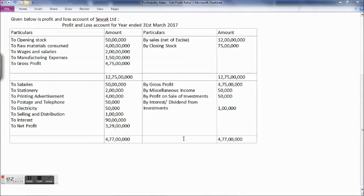On the debit side we have: to salaries 50 lakhs, to stationery 2 lakhs, to printing advertisement 4 lakhs, to postage and telephone 50,000, to electricity 50,000, to selling and distribution 1 lakh, to interest 90 lakhs, and to net profit is 3 crores 29 lakhs.